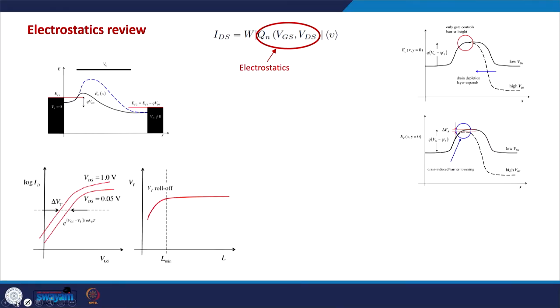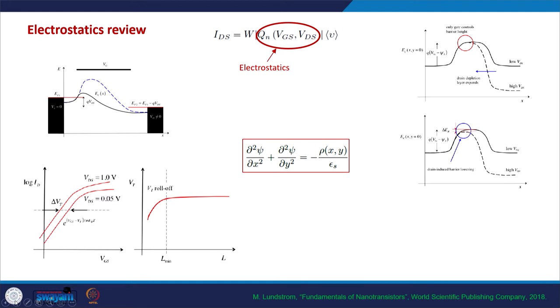As all of you may recall, we have been studying the effect of small channels. When we make MOSFETs very small, we observe the DIBL effect — drain induced barrier lowering — and there is also threshold voltage roll off, which is the reduction of threshold voltage as the channel length is reduced. This happens because the source and drain depletion regions are becoming a significant part of the channel.